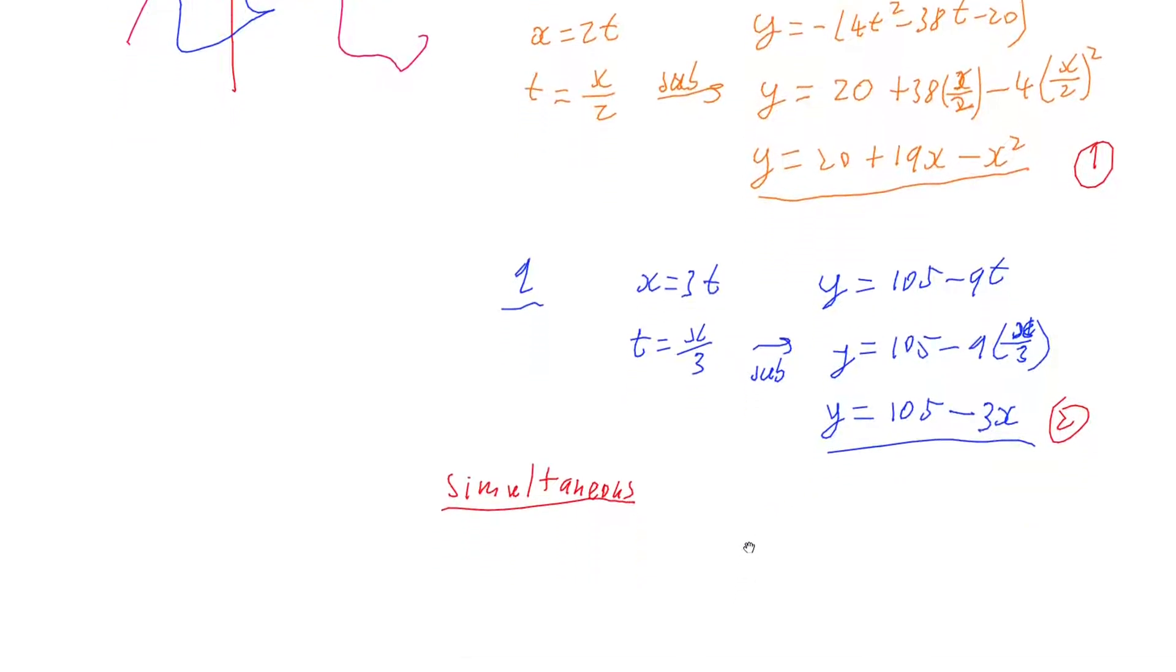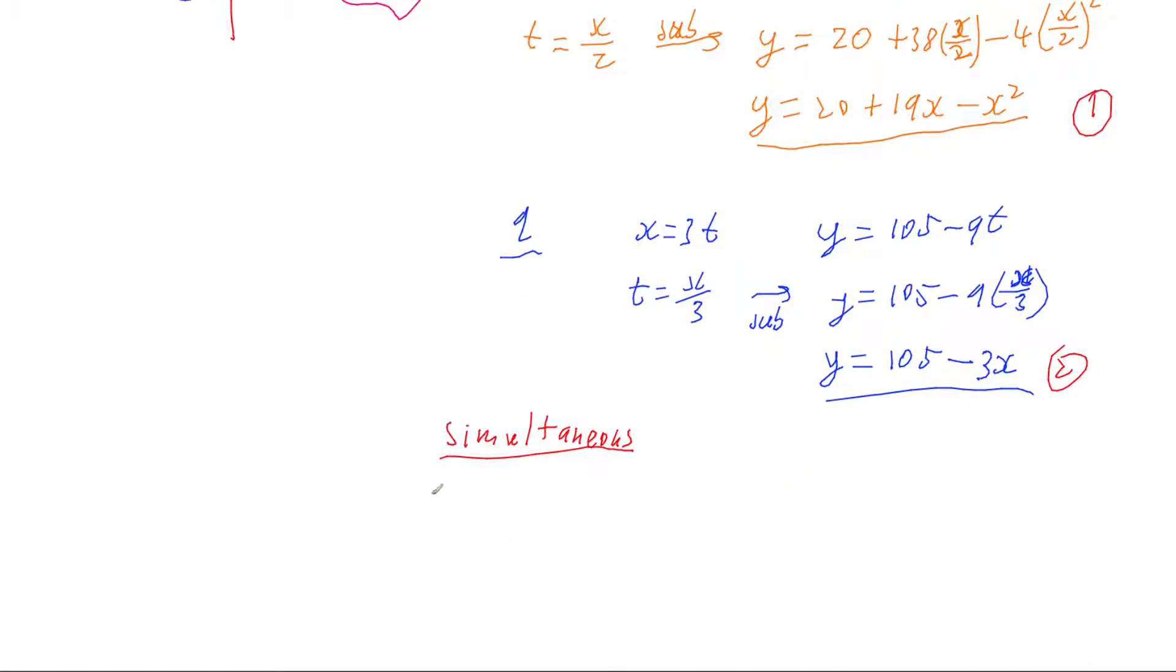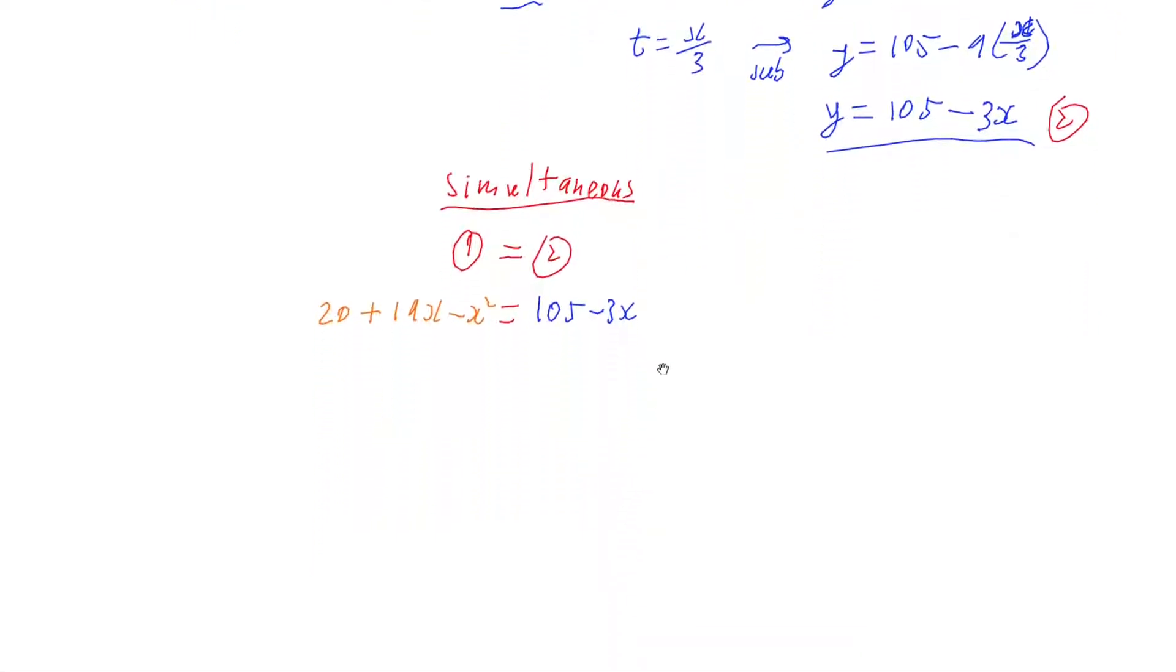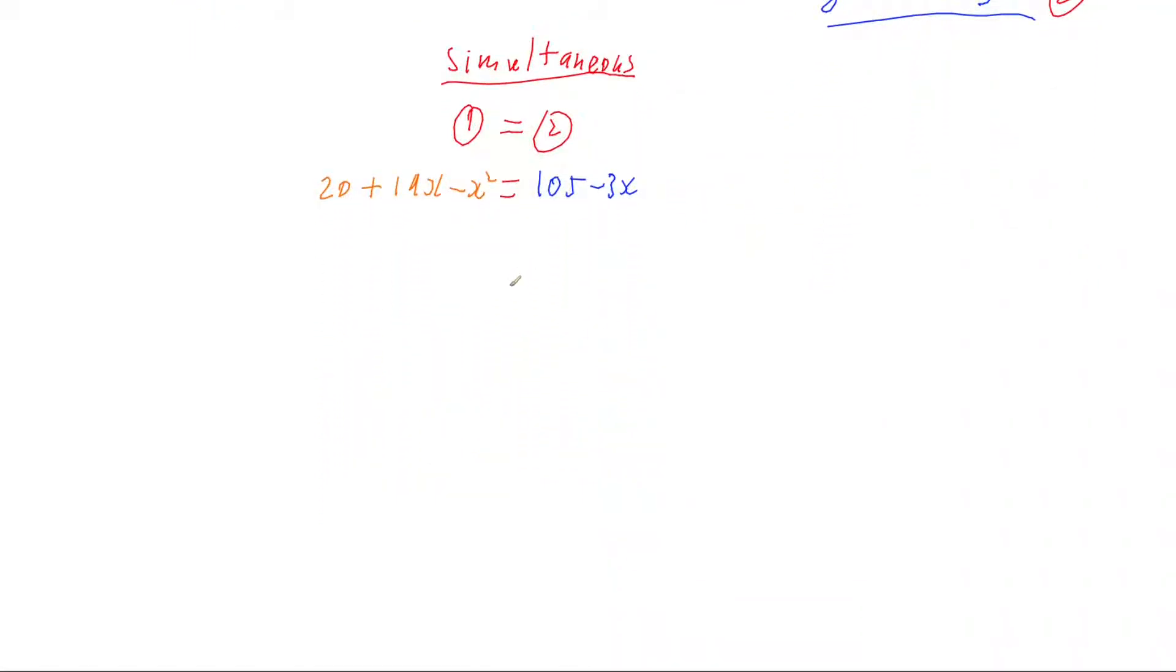So I've got these two equations and to solve my simultaneous solutions I'm going to equate the two, because I've got a recipe for y. I know that y equals this quadratic, I also know that y equals this linear, and the y's are the same so therefore the two equations must be the same. So that means that I have 20 plus 19x take x squared is the same as 105 minus 3x.